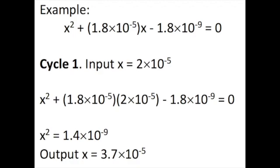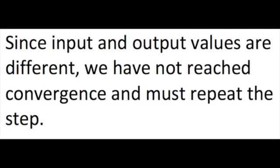We then solve for the x in the x² term, giving us an output value of 3.7×10⁻⁵. Since the input and output values are different, we have not solved the equation, so we must repeat the steps.